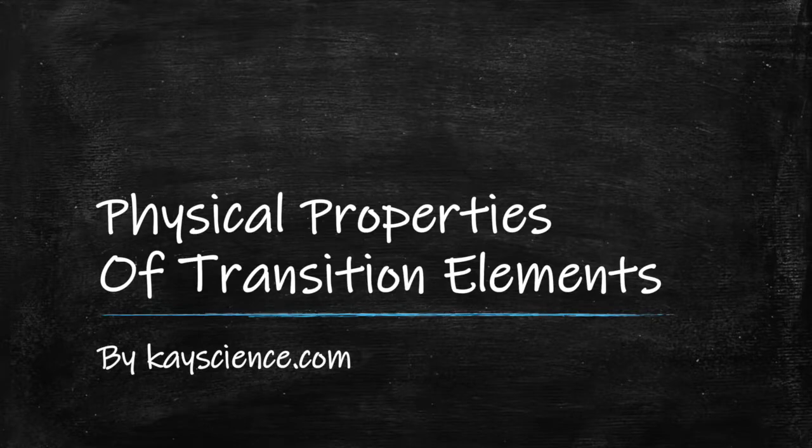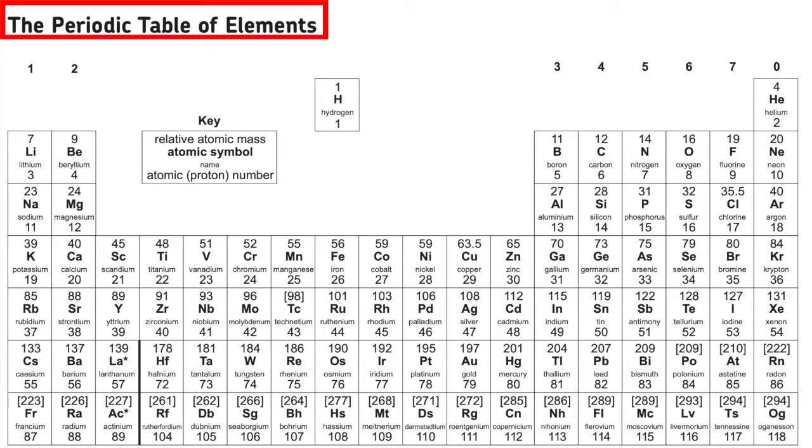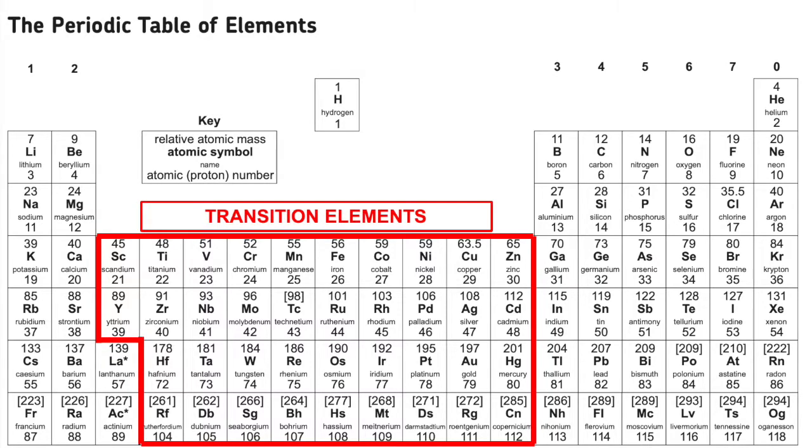Physical properties of transition elements by kscience.com. This is the periodic table of elements and between group two and three are the transition elements, also known as the transition metals.